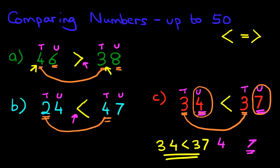To summarise: firstly look at the tens to see which is larger and which is smaller. If the tens are different numbers — as with 46 and 38, and also 24 and 47 — you can work it out without looking at the units. But if the tens are the same — as in example C with 34 and 37 — then you have to look at the units. That is how we compare numbers up to 50 using the tens and the units.